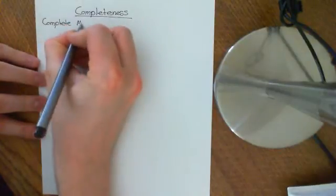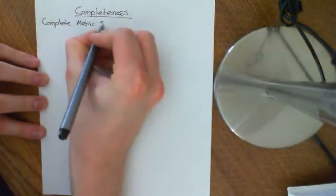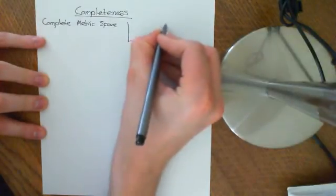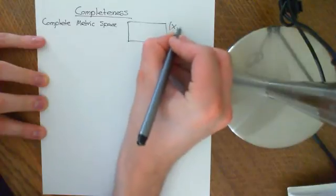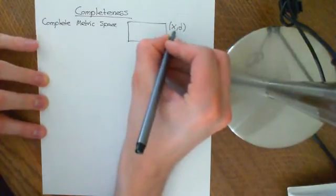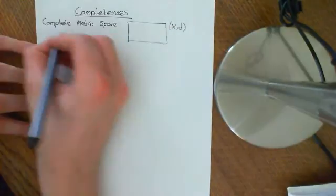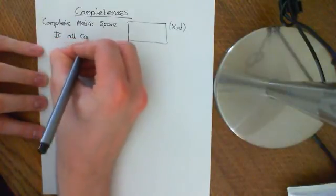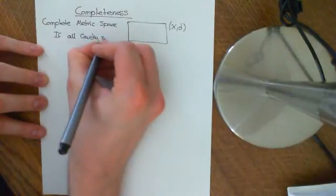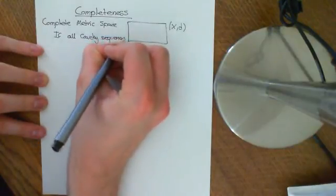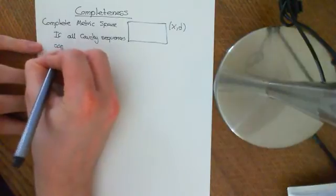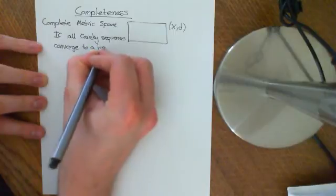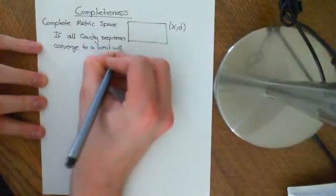A complete metric space: you have a metric space (X, d), which consists of a set and a metric defined on it. This metric space is said to be complete if all Cauchy sequences are convergent — that is, Cauchy sequences converge to a limit within the metric space.